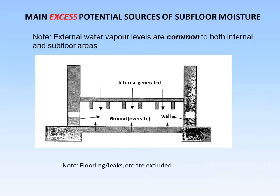The main excess potential sources of water in the subfloor void: external water levels are common to both internal and subfloor areas — a common factor everywhere. Other sources within the subfloor void include internally generated moisture from activities within the house, ground moisture from the oversight, and of course the short length of wall if damp. Flooding and leaks are excluded from this presentation as non-natural excess moisture sources.